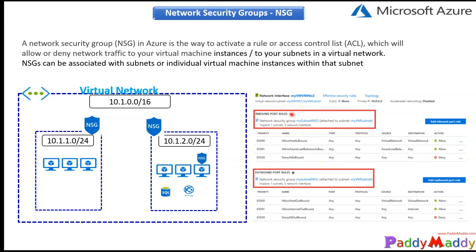Don't confuse NSG with routing. Routing is always open for every machine and determines the path — whether you go over a public route or a private route. NSG is like your main door: it controls whether a specific protocol or communication is allowed inside your subnet or virtual machine. Routing and security are completely separate concerns.